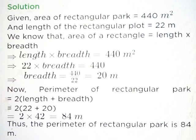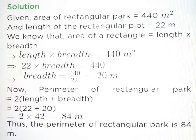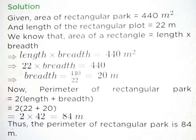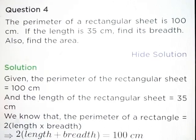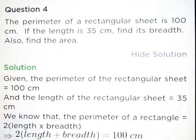Now, perimeter of a rectangular park is equal to 2 into length plus breadth. 2 into 22 plus 20 is equal to 2 into 42, that is equal to 84 meter. Thus, the perimeter of a rectangular park is 84 meter. Question number 4. The perimeter of a rectangular sheet is 100 cm. If the length is 35 cm, find its breadth. Also find the area.